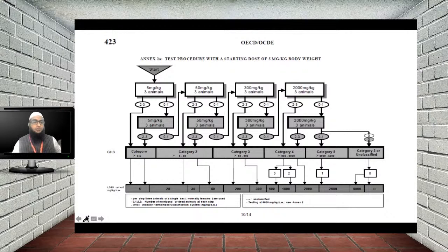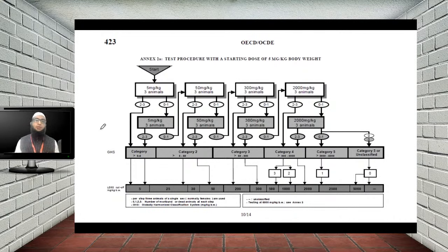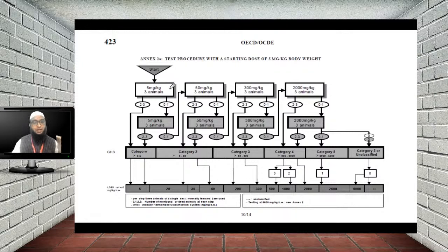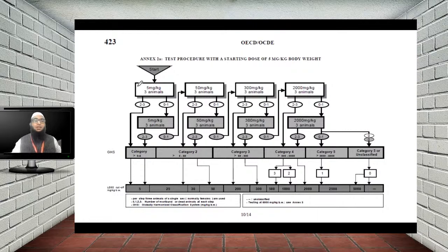If you have a drug molecule with no structurally related compound available, or one that has not been studied for toxicity, it is always better to start with the lowest possible dose. In OECD guideline 423 and 420, the four doses used are 5 mg, 50 mg, 300 mg, and 2000 mg per kg.